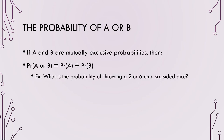Disjunctive claims use the word 'or,' and it's important to note that disjunctive claims strengthen a probability. For instance, the probability of throwing a two or a six on a six-sided die gives us a one in three chance. Notice how one in three is better than the one in six of rolling a two or the one in six of rolling a six. When we ask for the probability of throwing a two or a six, we add those probabilities and get a stronger percentage.